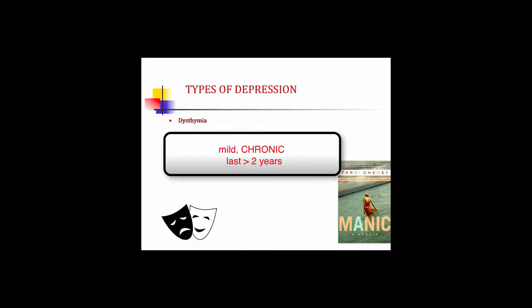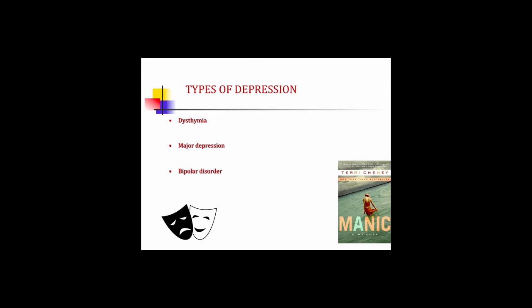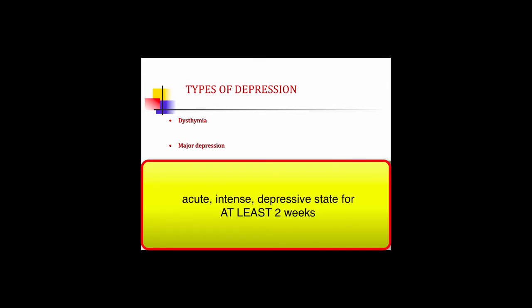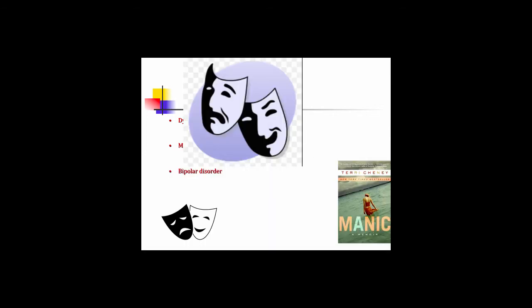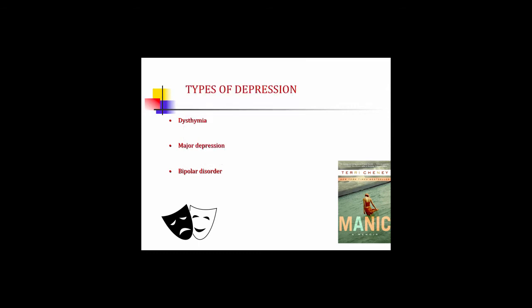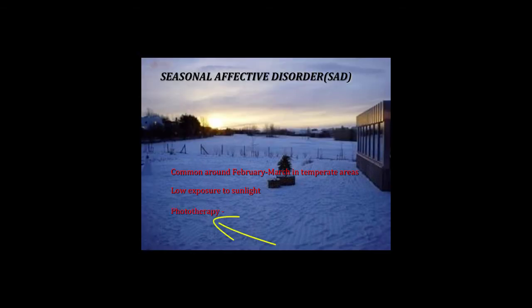Dysthymia is a mild, chronic depression lasting more than two years. A major depression is an acute, intense depressive state sustained for at least two weeks. Bipolar disorder used to be referred to as manic depressive disorder. We also have seasonal affective disorder, common around February and March in temperate areas, and it seems related to low exposure to sunlight. Some people respond to phototherapy — sitting for up to two and a half hours a day under artificial light — which helps with symptoms.